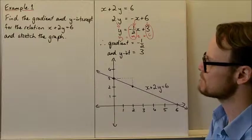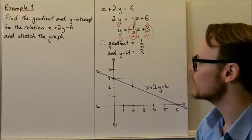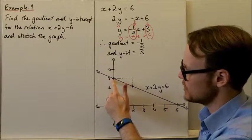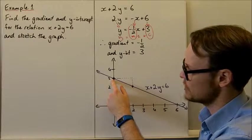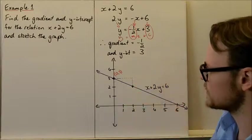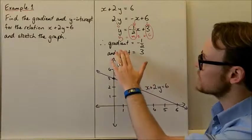To plot using gradient-intercept method, we locate our y-intercept at (0, 3) on the graph here. That's our y-intercept right there,